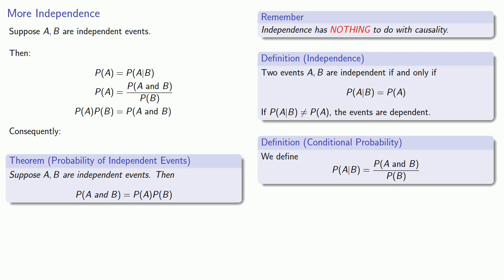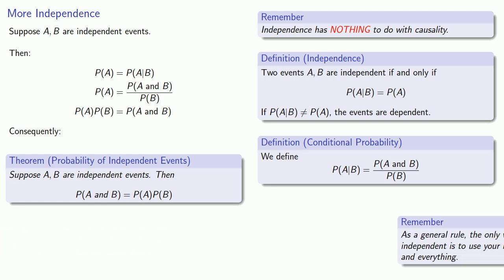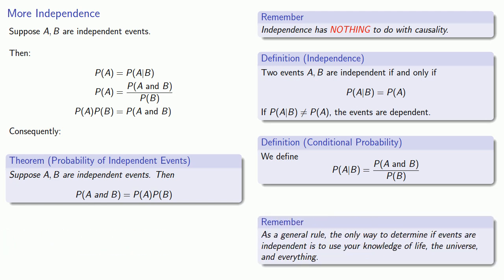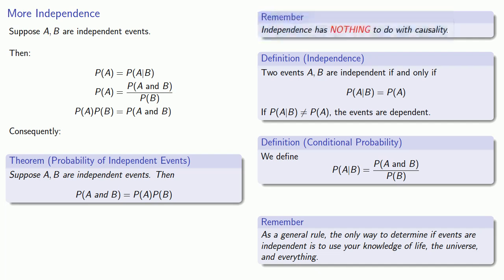So here's an important question: how can we determine if A and B are independent events? As a general rule, the only way to determine if events are independent is to use your knowledge of life, the universe, and everything. What's important to remember is that independence has nothing to do with causality. Instead, what matters is whether our knowledge that B has occurred changes our confidence that the event A has occurred.